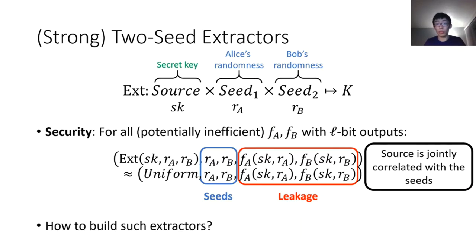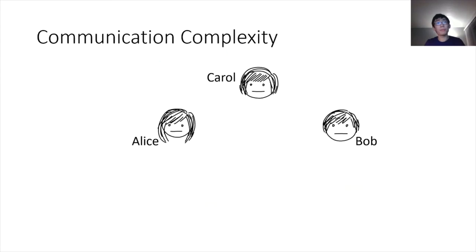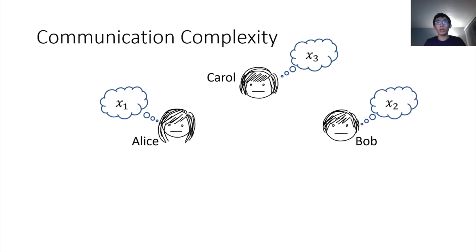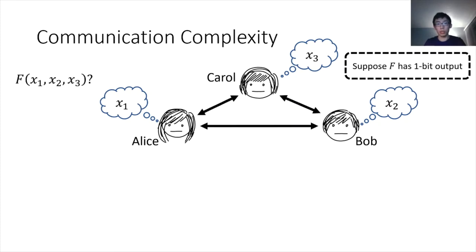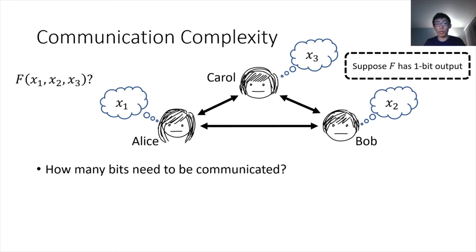The question now is how do we build such extractors? To do so, we rely on communication complexity. In communication complexity, you have several parties — Alice, Carol, and Bob — who want to compute some function over their inputs. They each have some input, and they want to compute the output of some function, so they communicate with each other and try to predict some value. The question is: how many bits do they have to communicate to compute this output?